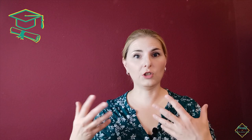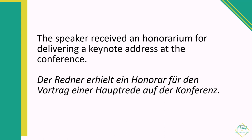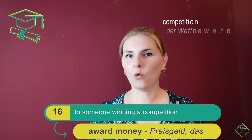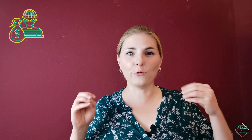If money is given to someone who comes to the university to teach — for example, one class or maybe even one lecture — but this person is not an employee of the university, they are given a so-called honorarium, ein Honorar. For example: 'The speaker received an honorarium for delivering a keynote address at the conference.' If money is given to someone winning a competition, this is called an award, or because it's a monetary prize, award money, das Preisgeld. For example: 'She won the writing competition and received a significant amount of award money.'